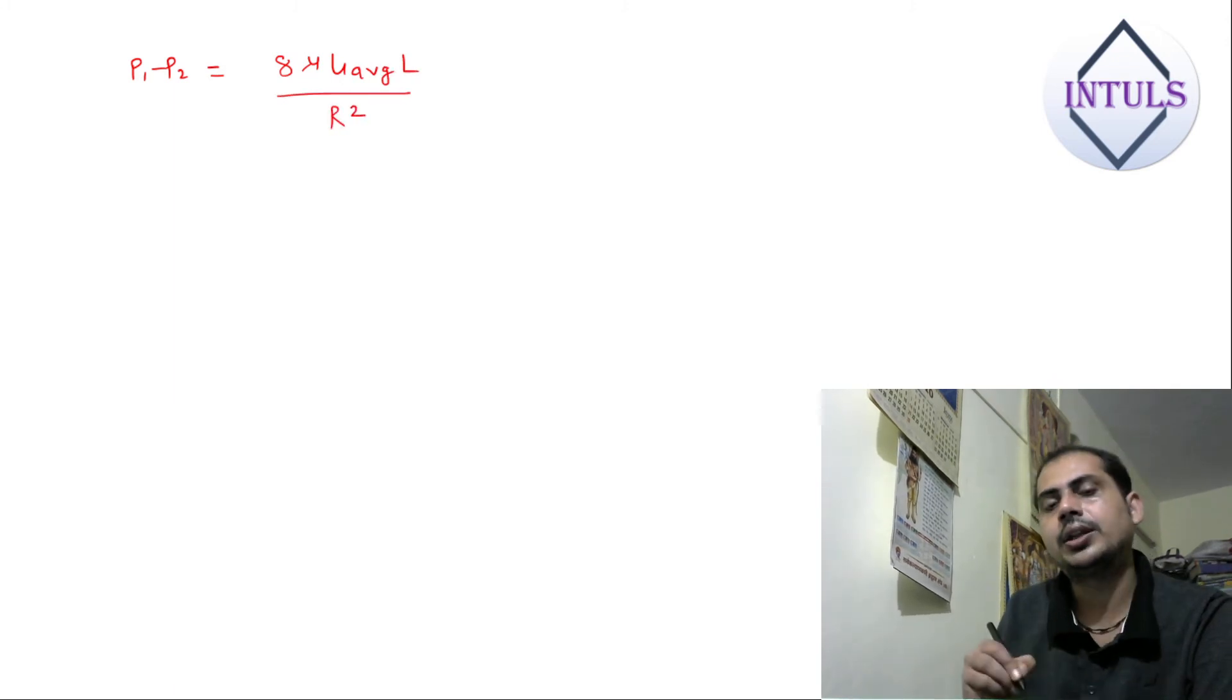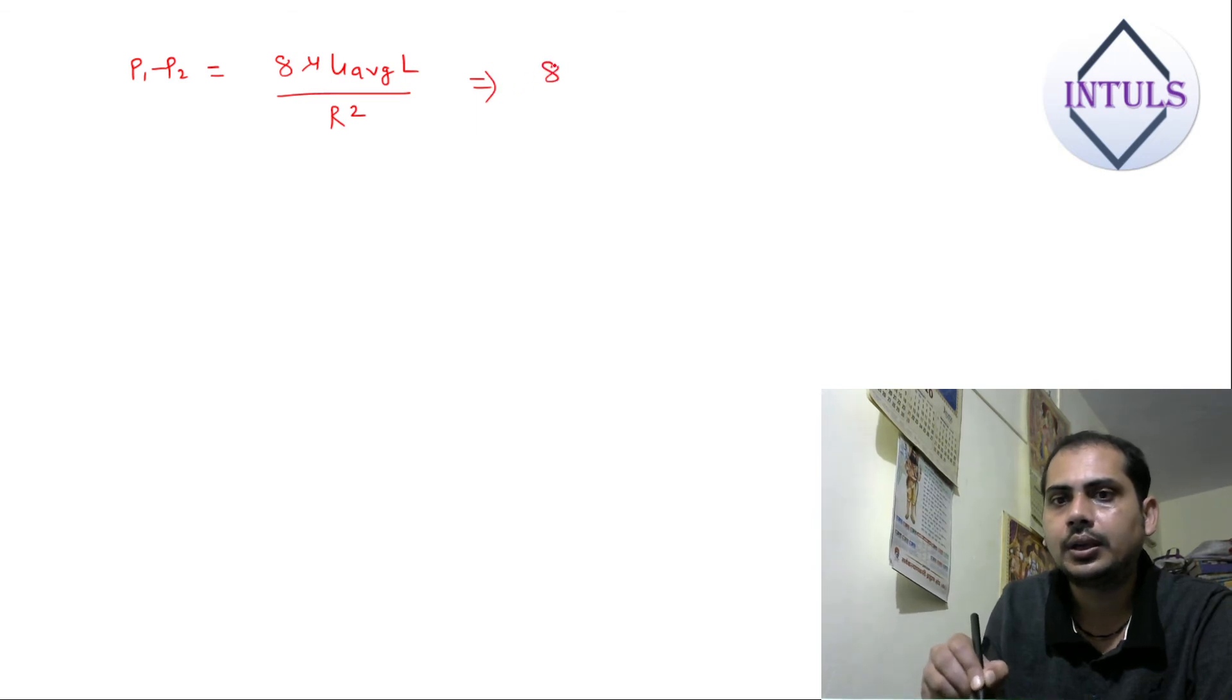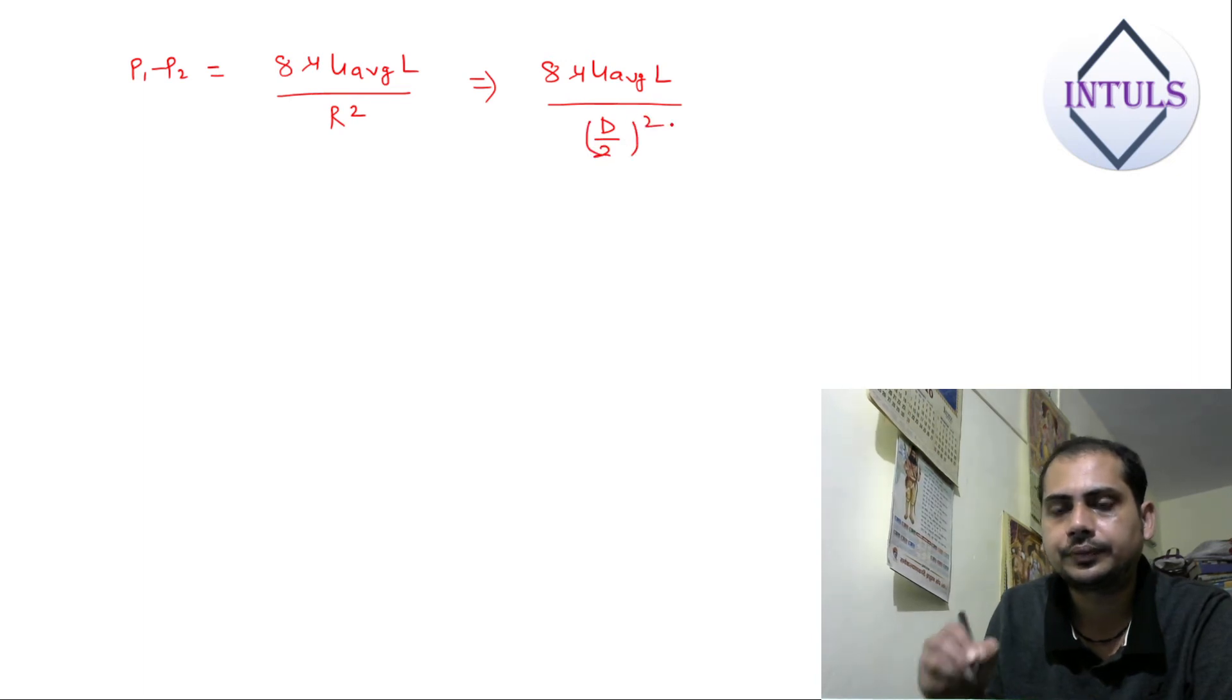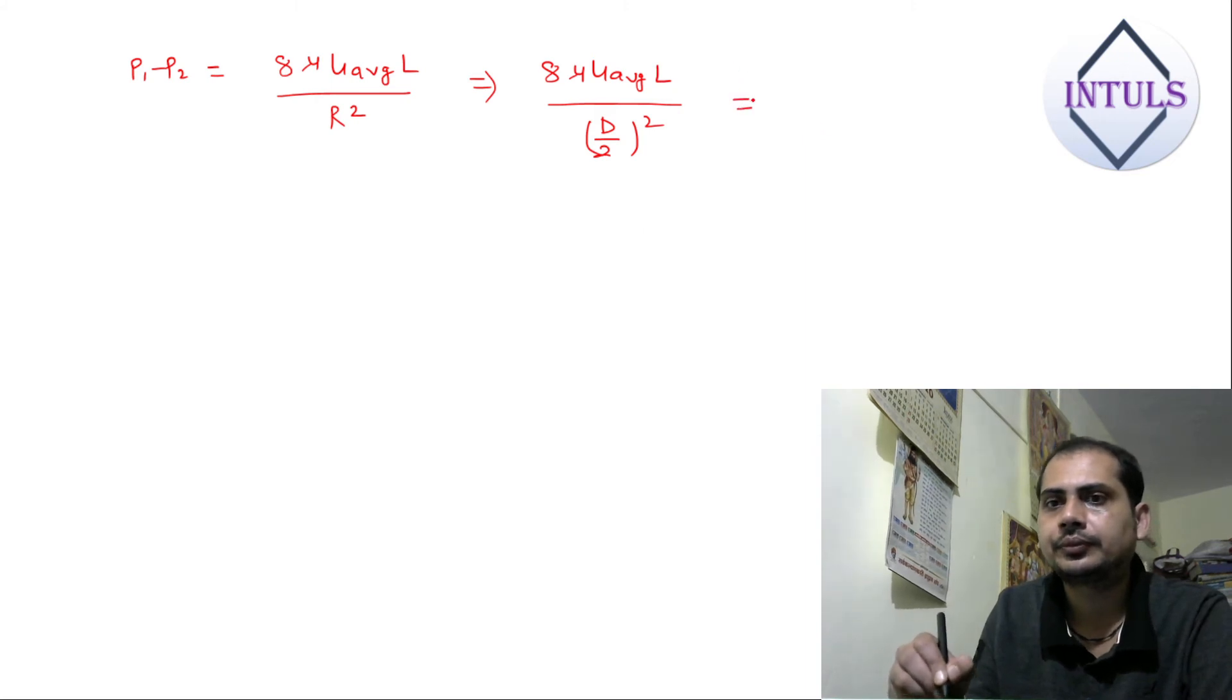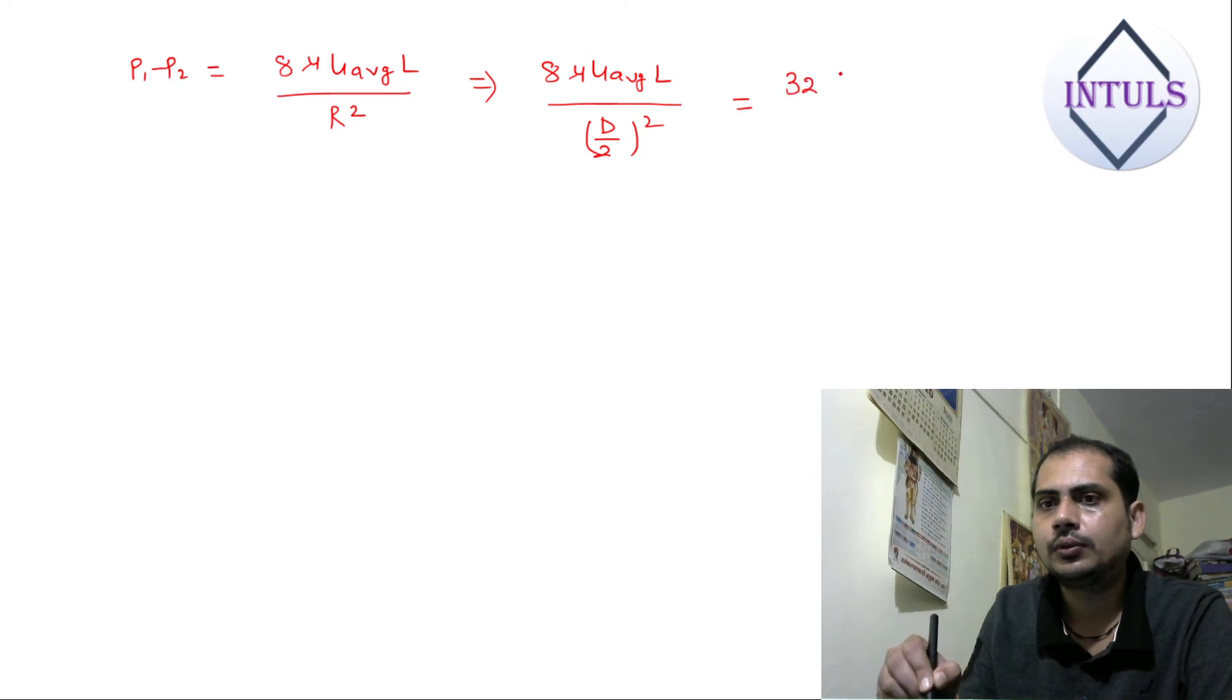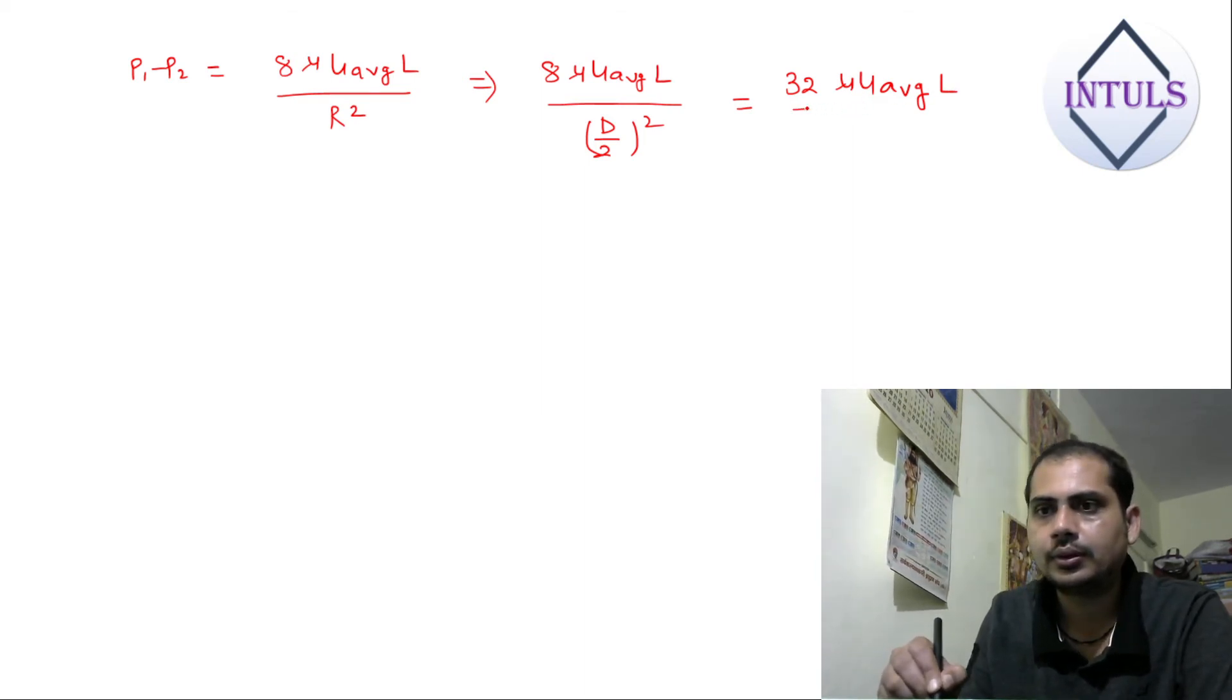If you want to write in the term of the diameter, then you have to put in the place of R, D by 2. So let us put that: 8 mu u_average L, D by 2 whole square, and you will get 32 mu u_average L upon D square.